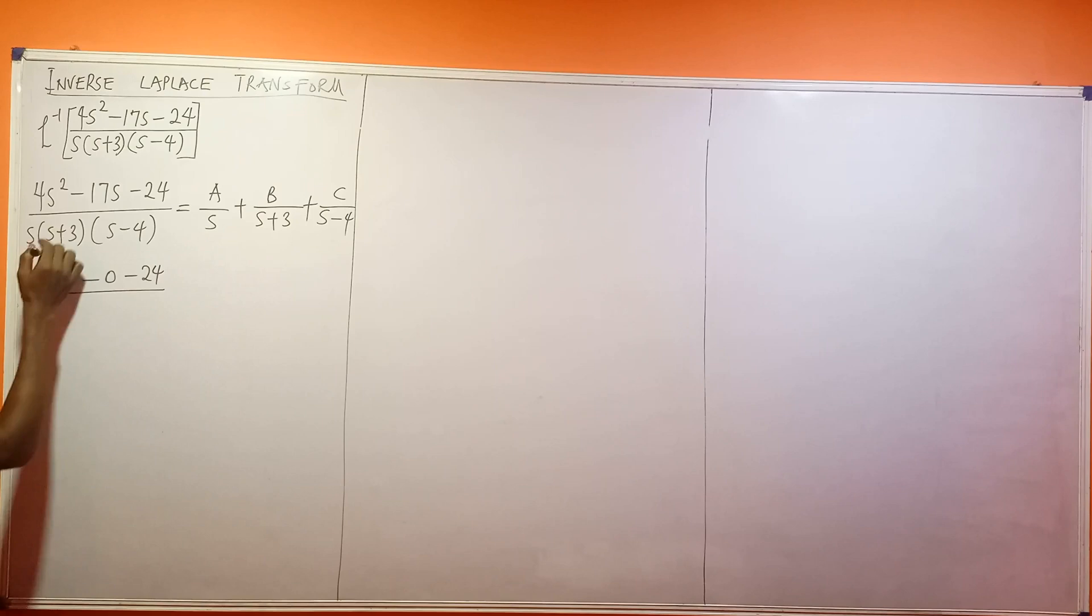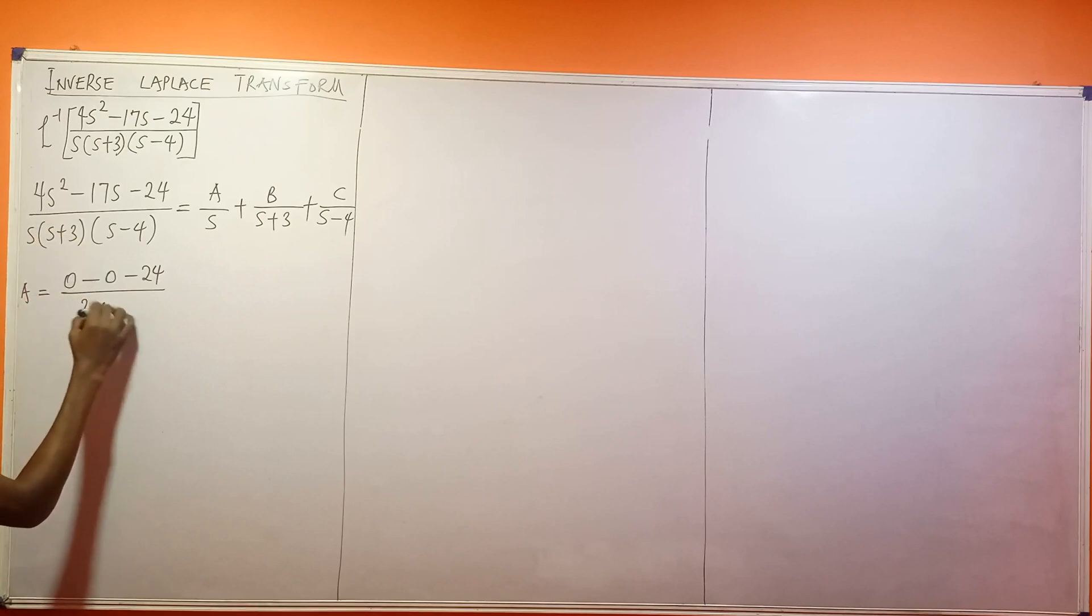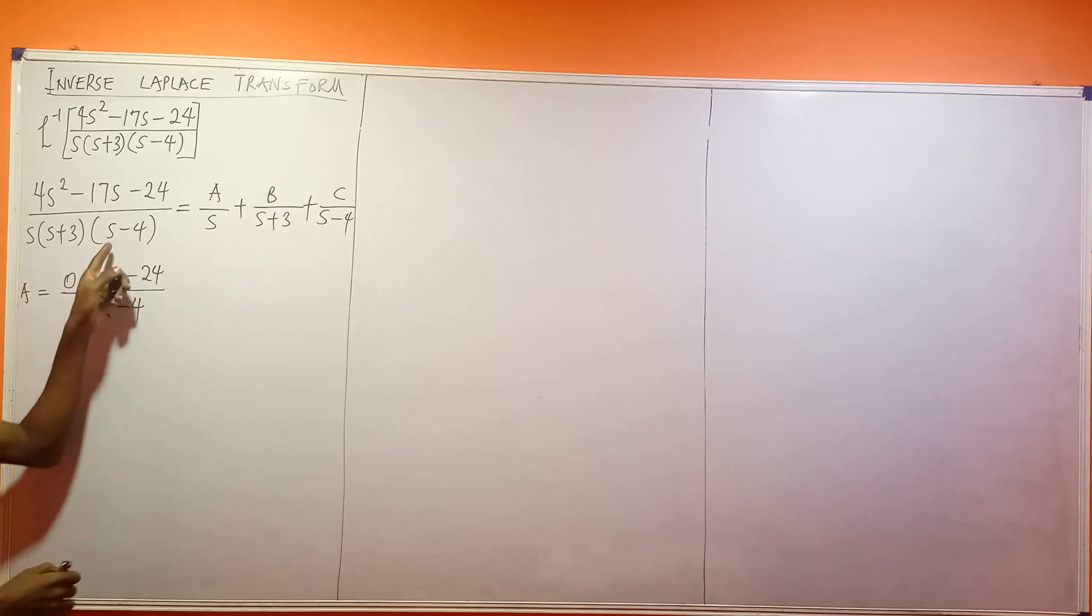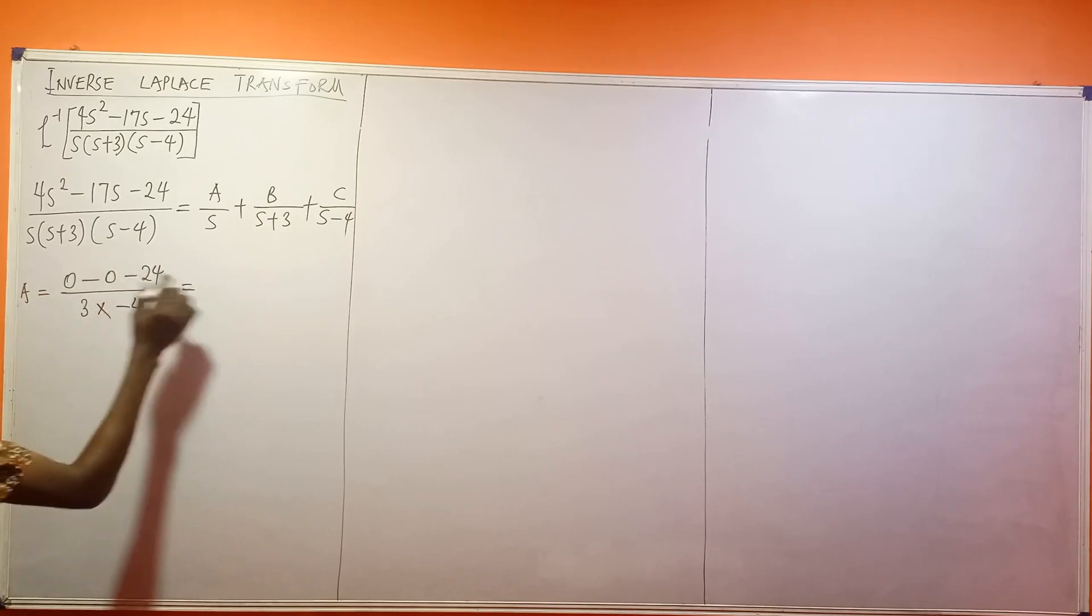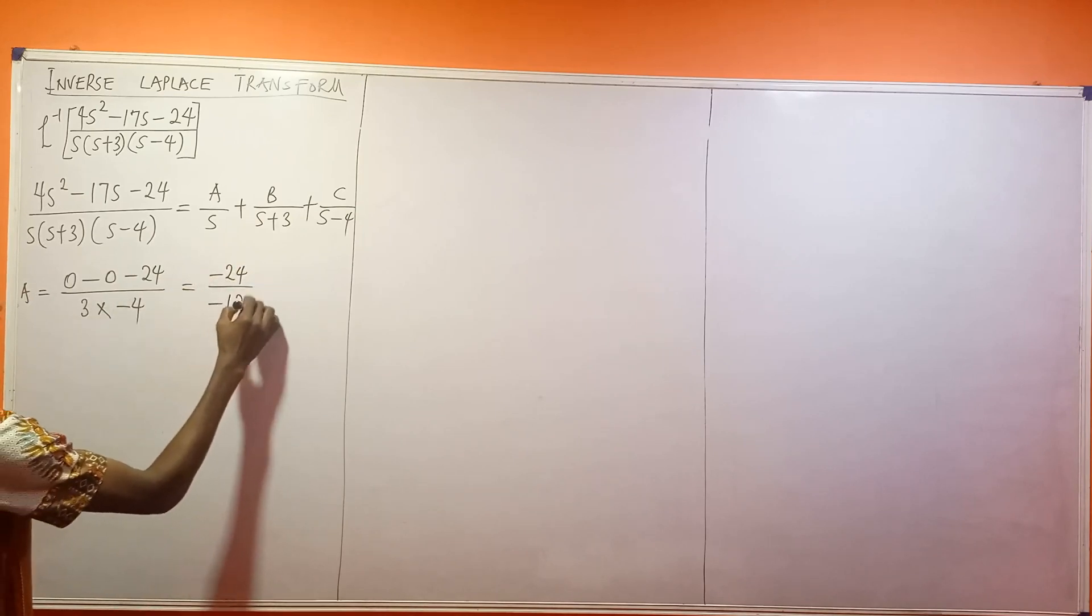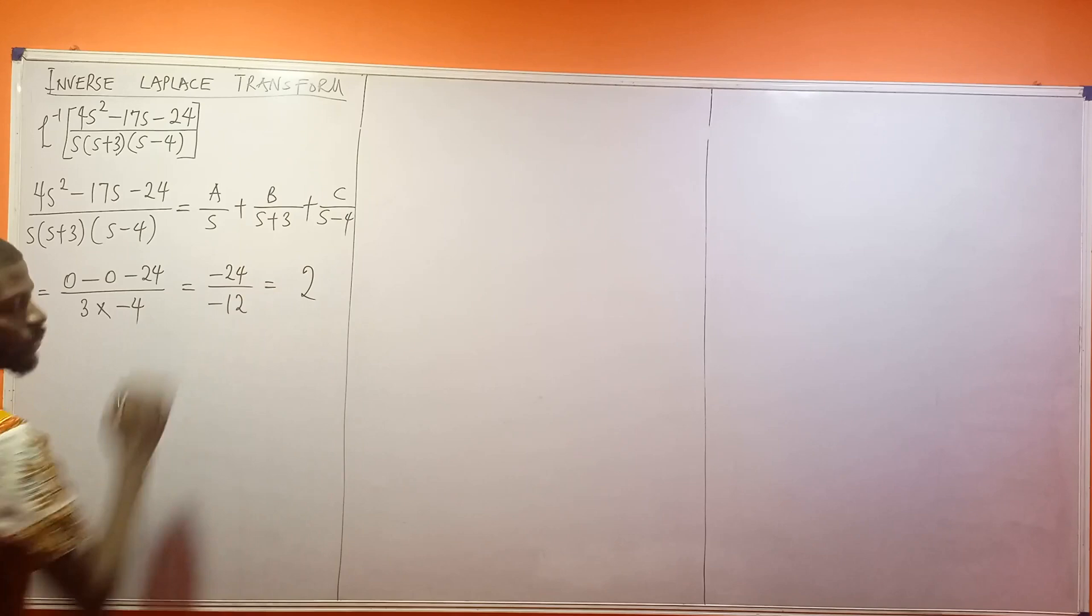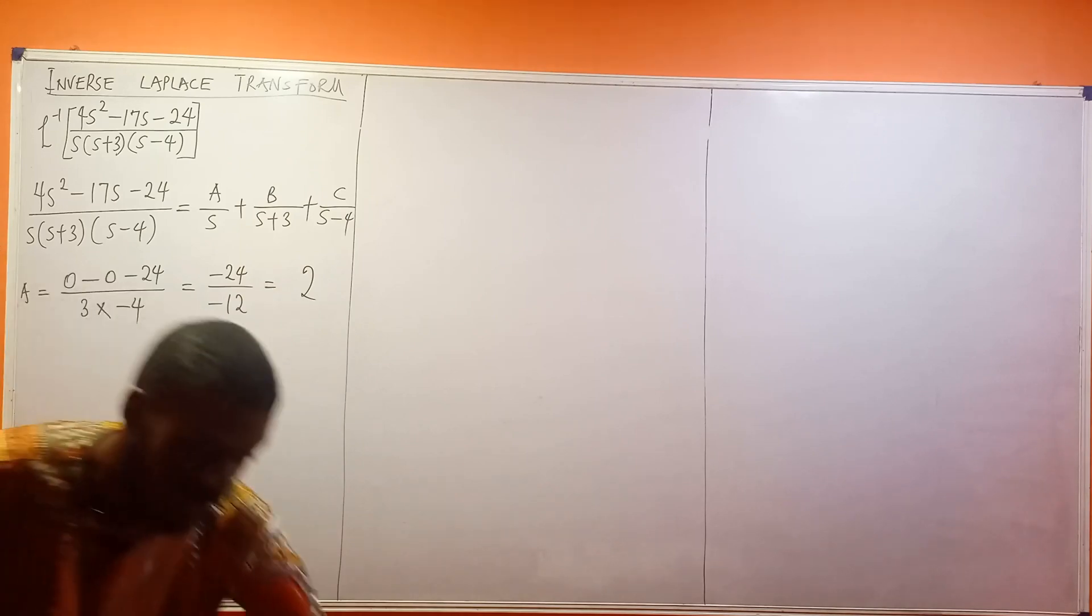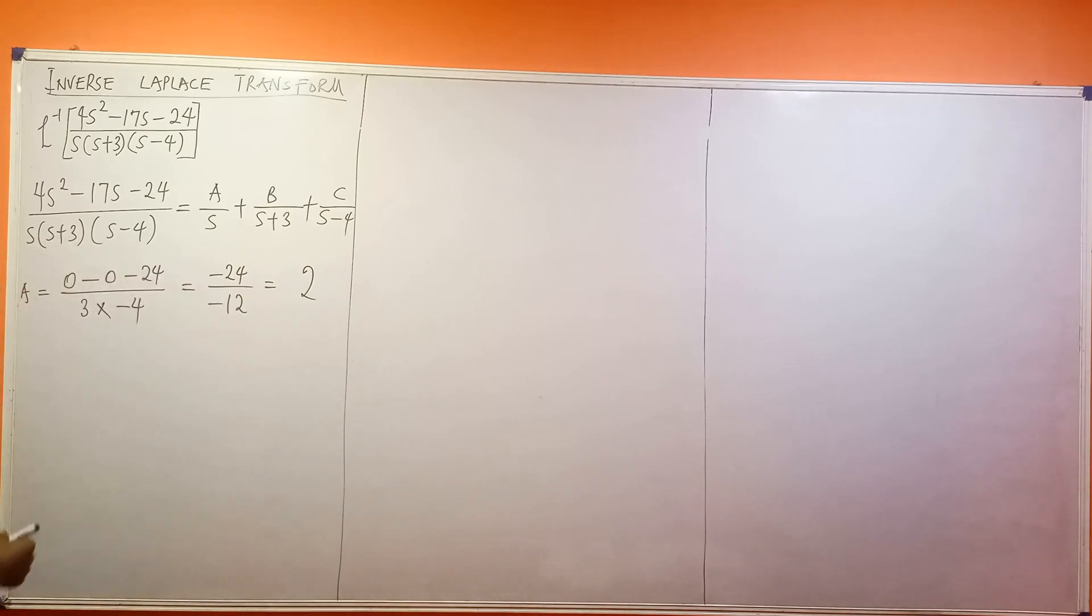Everything here is going to be 0 minus 0 minus 24 divided by, s plus 3 here, what will be remaining? 3 times what will be remaining here? Minus 4. So this will become minus 24 over minus 12, which gives you 2 at the end of the day. So that's your A.